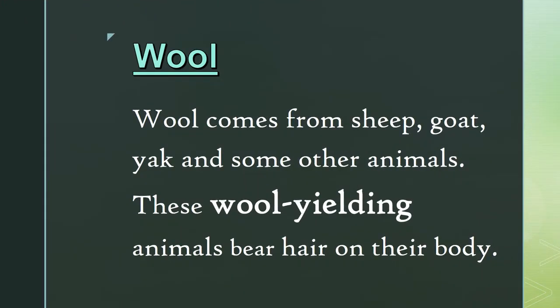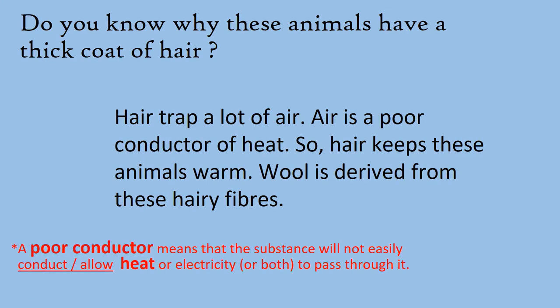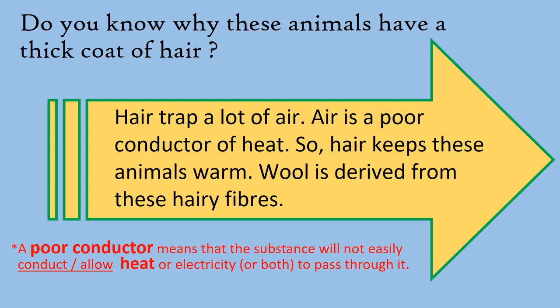Let us first of all take up the topic: Wool. Wool comes from sheep, goat, yak, and other animals. These wool-yielding or wool-producing animals bear hair on their body. Have you ever wondered why these animals have a thick coat of hair? Hair traps a lot of air. Air is a poor conductor of heat, so hair keeps these animals warm. Wool is derived from these hairy fibers.